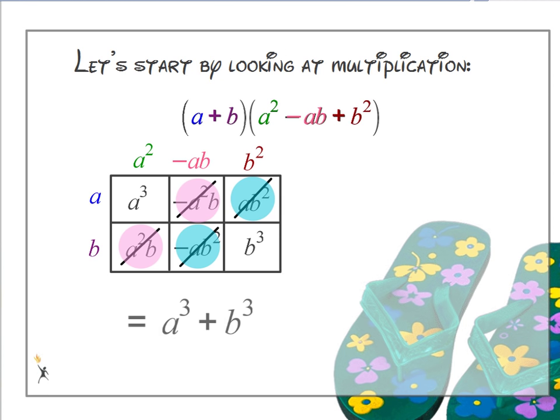I end up with the sum of a cubed and b cubed. This is called a cubic binomial. Cubic because both terms are cubed or taken to the third power. And binomial because it only has two terms.